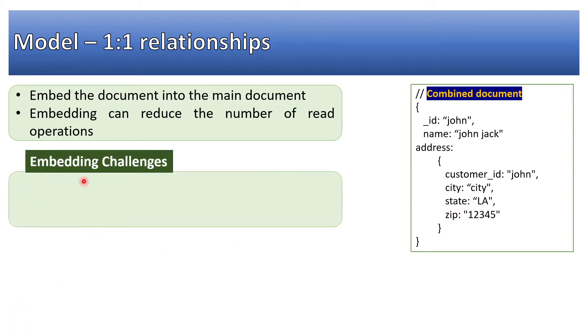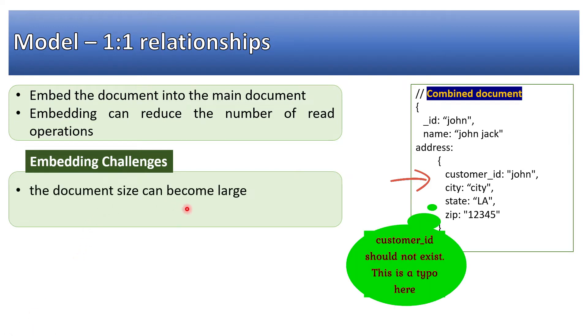Embedding challenges: what could be the embedding challenges? Have you given a thought to it? The document size can become large. It could be so large that it will lead to performance issues. For example, in case a customer is having three or four addresses, and then in some other case, product is having multiple reviews or movies having multiple reviews—that way the document size can grow very huge.